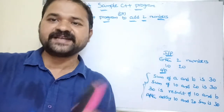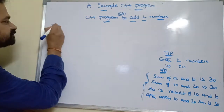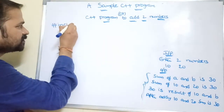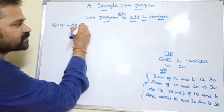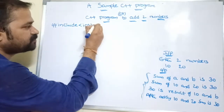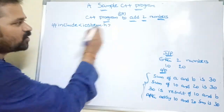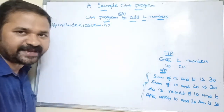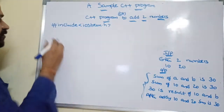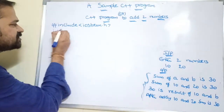The first statement is `#include <iostream.h>`. We need this because in this program we use the cout and cin objects, and those objects are available in iostream.h — where 'i' stands for input and 'o' stands for output.